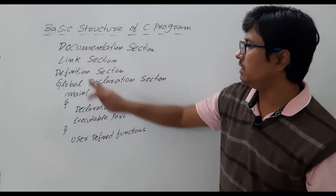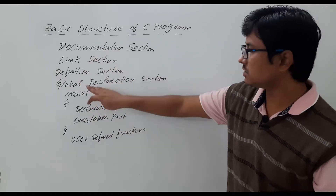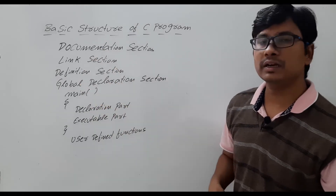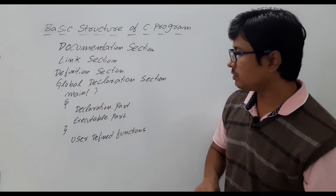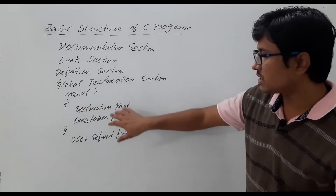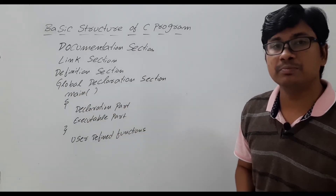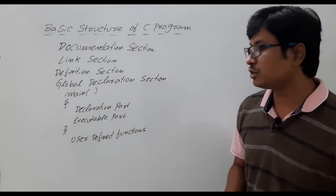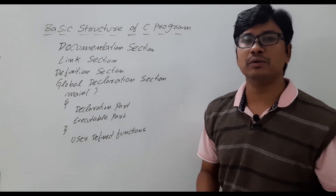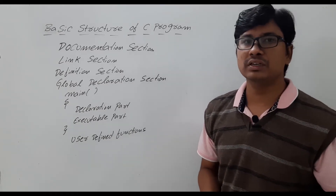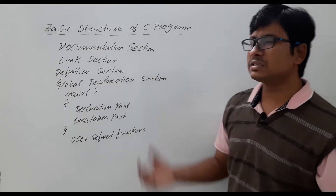So this is the basic structure of a C program. We have the documentation section, link section, definition section, global declaration section, and the main function which consists of two parts — declaration part and executable part — and then the user-defined functions. Now let me discuss what is the documentation section.